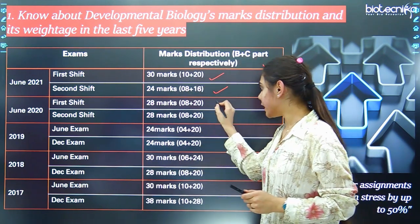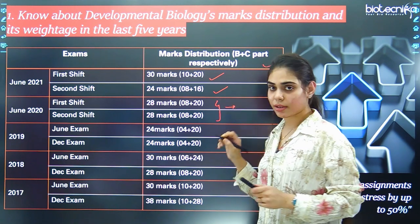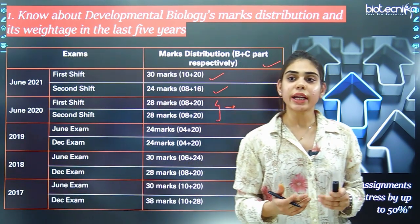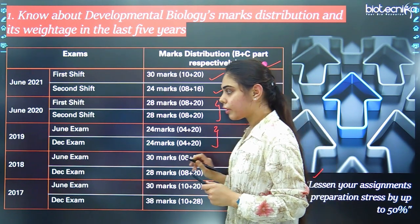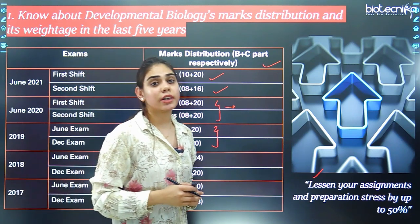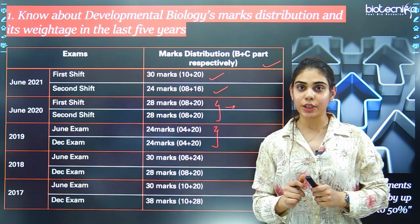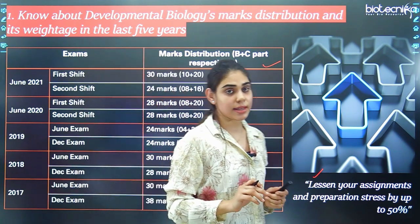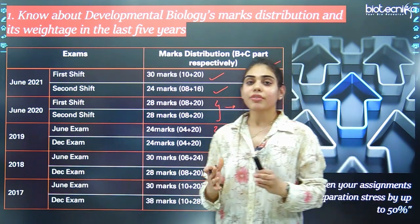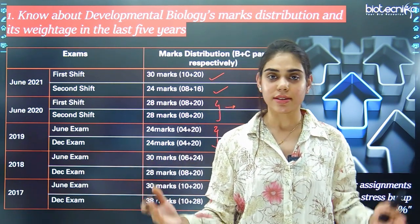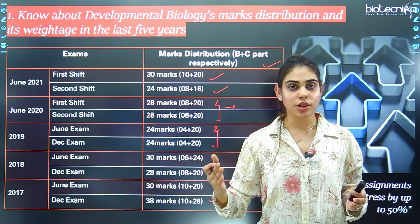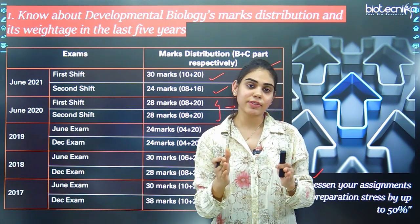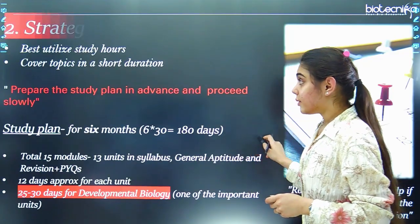In the 2019 exams (June and December attempts), it was asked for 24 marks each. In June 2018 it was asked for 30 marks, and in December 2018 for 28 marks. In the June 2017 attempt it was asked for 30 marks, and in December 2017 for 38 marks. After reviewing all this marks distribution, we arrive at an approximation: 25 to 35 marks of questions are asked every year from this unit. You should be thorough with all concepts of Unit 5.